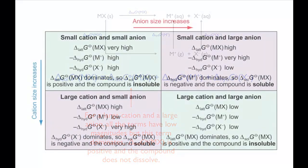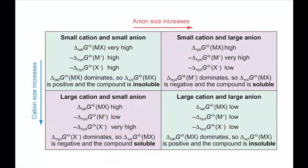Going down group 1, the cation size increases. So for compounds with a small anion, you move from the lattice energy dominating to the energy change of hydration dominating. For compounds with a large anion, the opposite is true — you go from the energy change of hydration dominating to the lattice energy dominating.